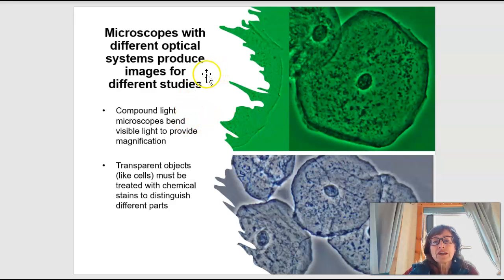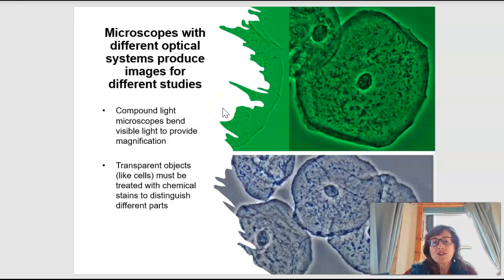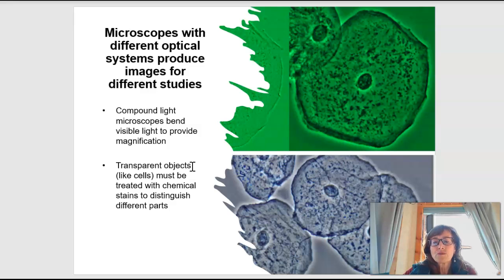The compound light microscope uses light — hence the term 'light' — and has a series of lenses. We magnify images using light as it bends through different lenses to give us more magnification. Because cells are basically transparent, they aren't as pretty as we see them in images. They have to be stained — treated with something that helps certain parts within the cell pick up that stain — so we can have some contrast and see at least some aspects of the cell.